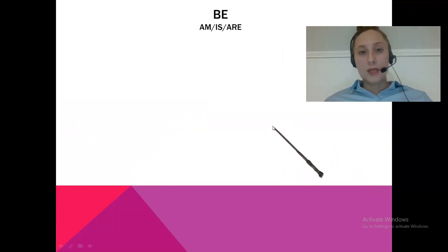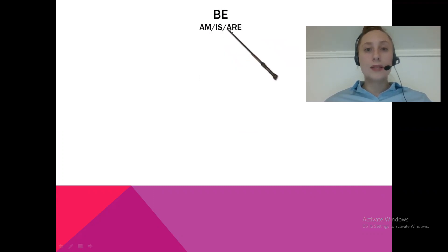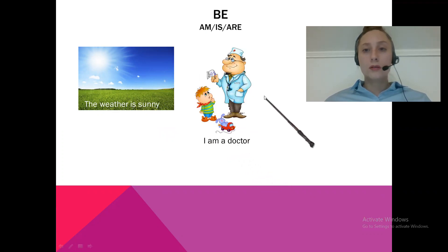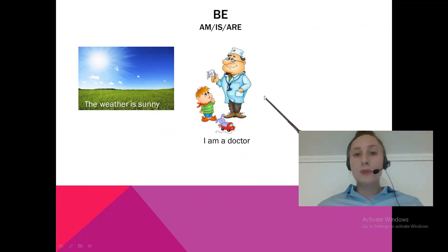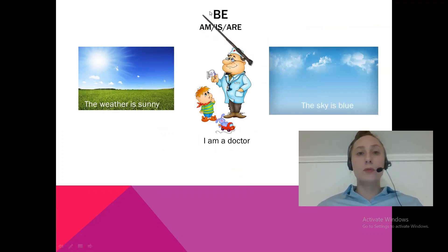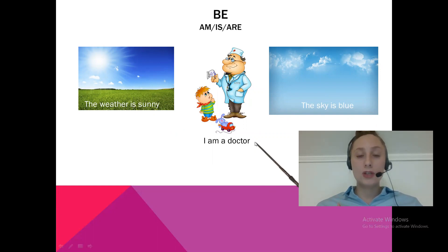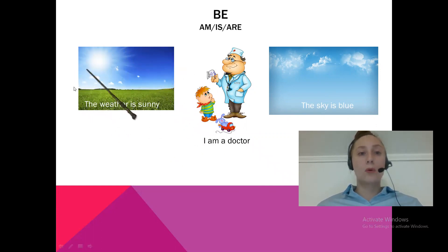В Present Simple мы используем либо глагол be в его формах am, is, are, когда говорим, например: «The weather is sunny», «I am a doctor», «The sky is blue». То есть мы используем форму глагола be — am, is, are — когда говорим о чём-то постоянном, например небо голубое, трава зелёная, земля круглая, или о нашей профессии: I am a teacher, you are students. Или когда говорим про погоду в конкретный момент: the weather is sunny. Окей.